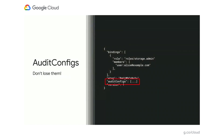While not directly related to the access management focus of this session, IAM policies do contain a field related to the audit logging configuration called audit configs. When performing changes intended to grant or revoke access, just be sure not to drop or otherwise modify this field, as you may inadvertently change your audit logging configuration.